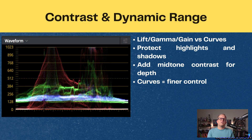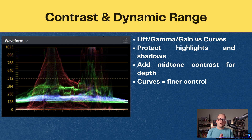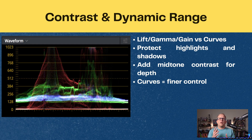Next up is contrast. You've already worked with lift, gamma, and gain in the previous tutorial, but here's where curves come into the picture — they give you much finer control. You can add a gentle S-curve to deepen your shadows and brighten your highlights while protecting your midtones, or add mid-tone contrast specifically, which creates a little bit of depth in faces without crushing your shadows. Always protect the highlights and shadows. Because once they clip — once you push the highlights above that top line or the shadows below the bottom line — that detail is gone.